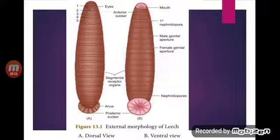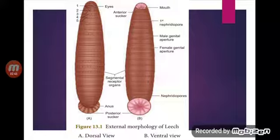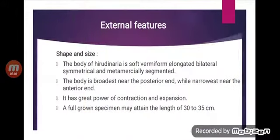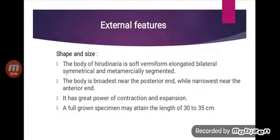Coming to the external features — shape and size: the body of Hirudinaria is soft, vermiform, elongated, bilaterally symmetrical, and metamerically segmented. In a state of extension, the body is dorso-ventrally flattened and appears almost strap-shaped. In a state of contraction, the body becomes more or less cylindrical. The body is broadest near the posterior end and narrowest near the anterior end. It has a great power of contraction and expansion. A full-grown specimen may attain a length of 30 to 35 centimeters.